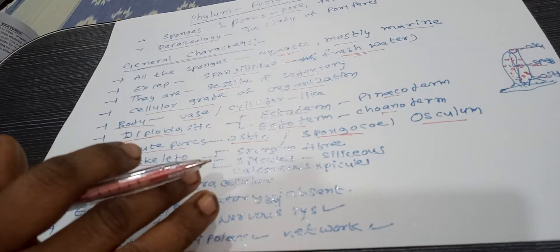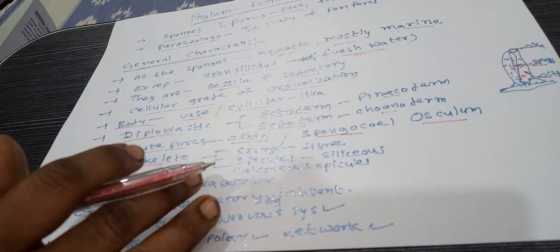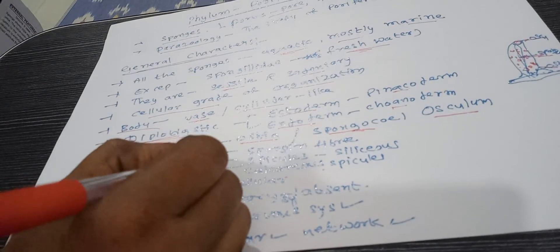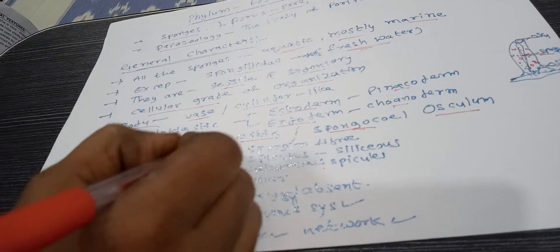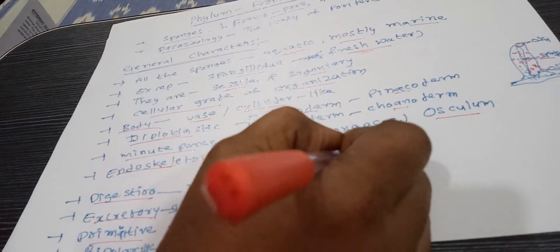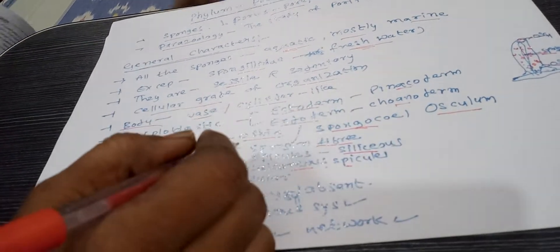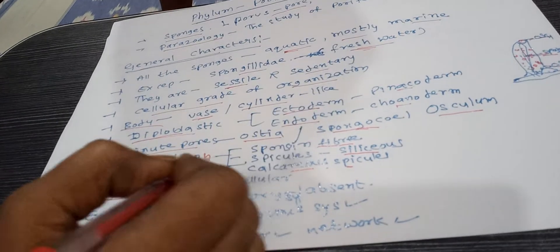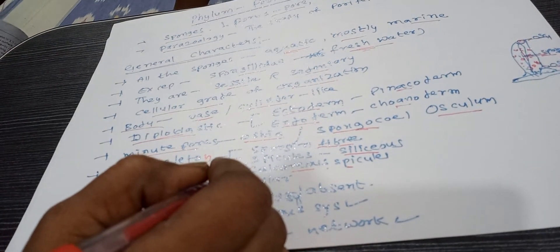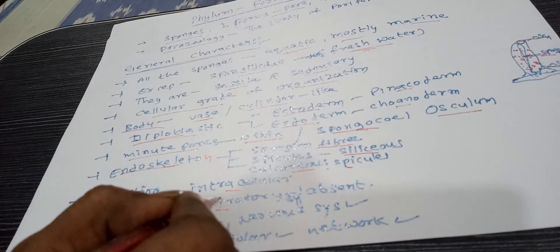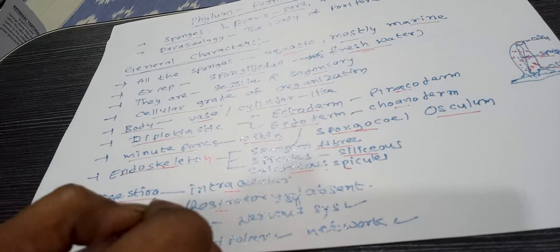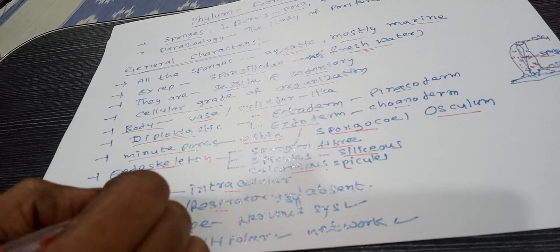Endoskeleton consists of spongin fibers and siliceous spicules or calcareous spicules. Digestion is intracellular. The excretory system and respiratory system are both absent in sponges.